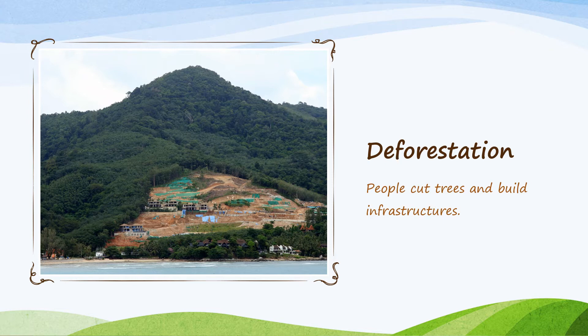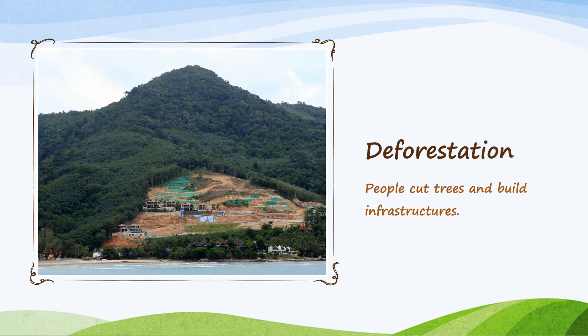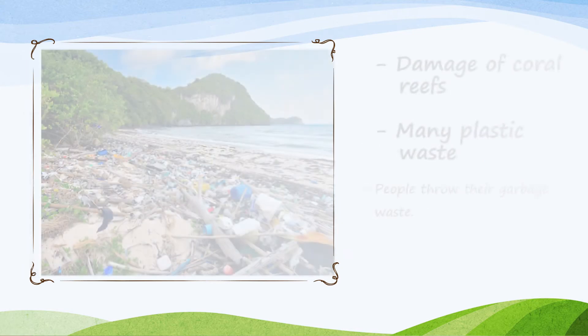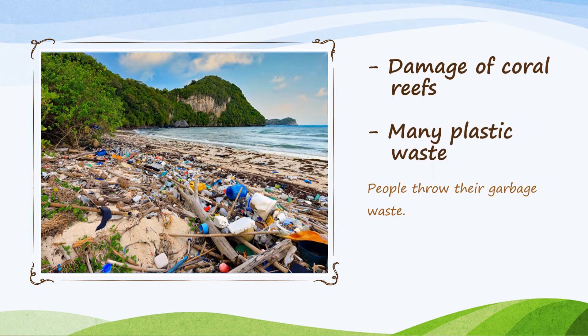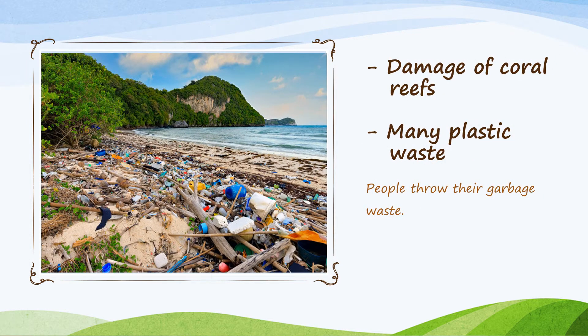People cut trees and build infrastructures. In this picture, we can see a lot of garbage waste along the seashores. Damage of coral reefs. Many plastic waste — people throw their garbage waste.